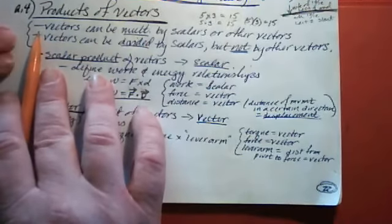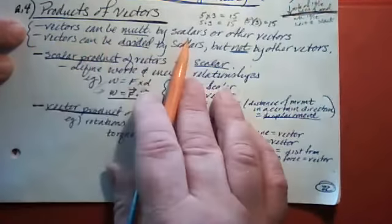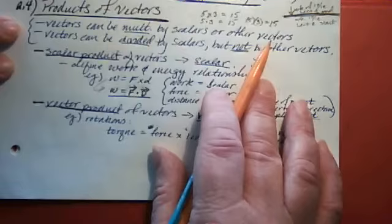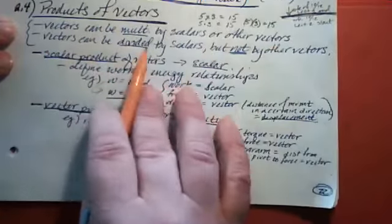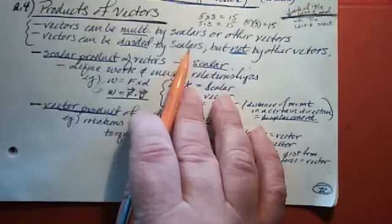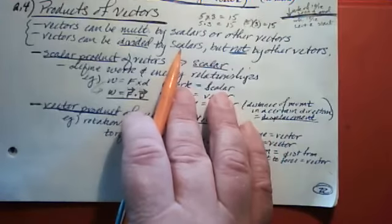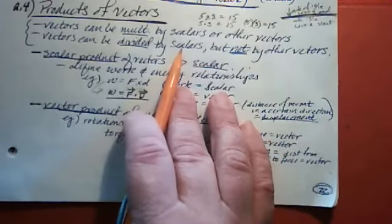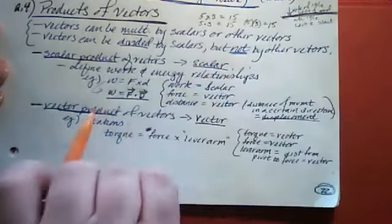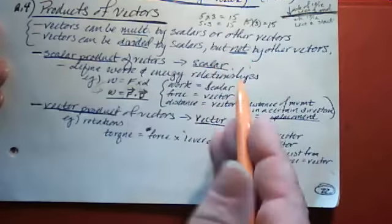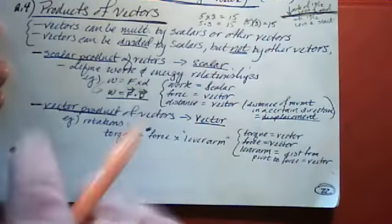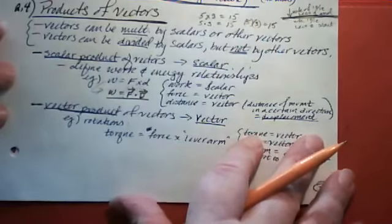To get a couple of the basic rules out of the way: vectors can be multiplied by scalars — that's not new, we've done that many times already — and they can be multiplied by other vectors, which is what we're going to be doing in this section. Vectors can be divided by scalars, because dividing a vector by a scalar is the same as multiplying it by one over the scalar. But you cannot divide a vector by another vector, because multiplication in vectors is different from multiplication of just numbers.